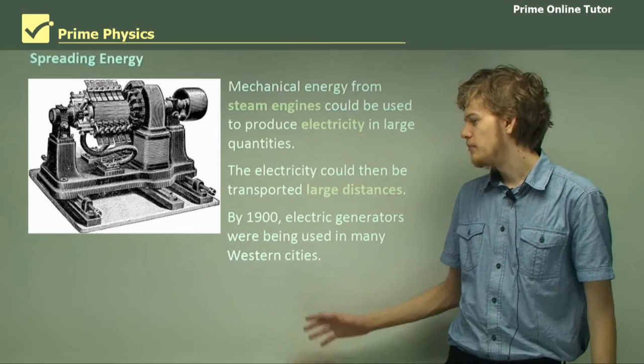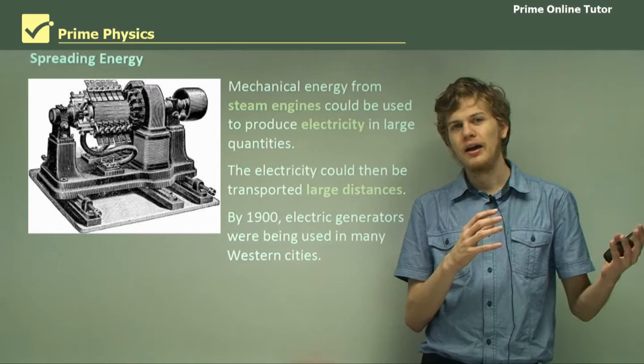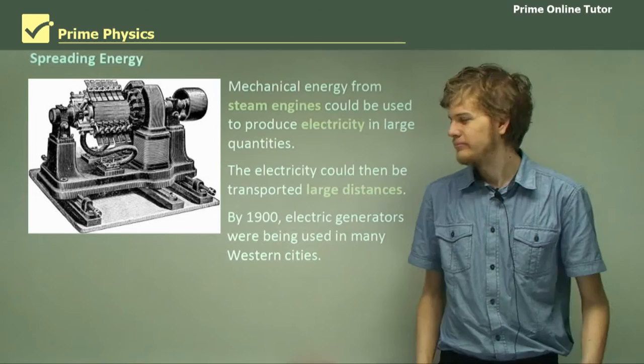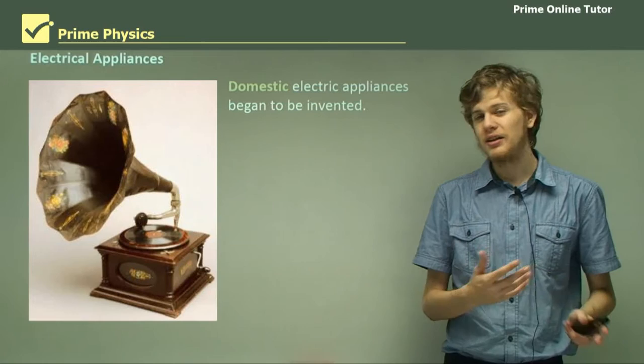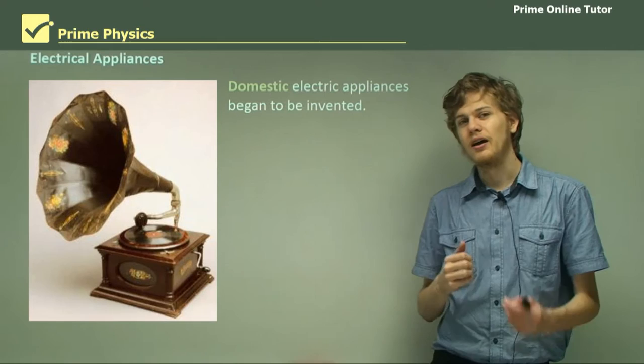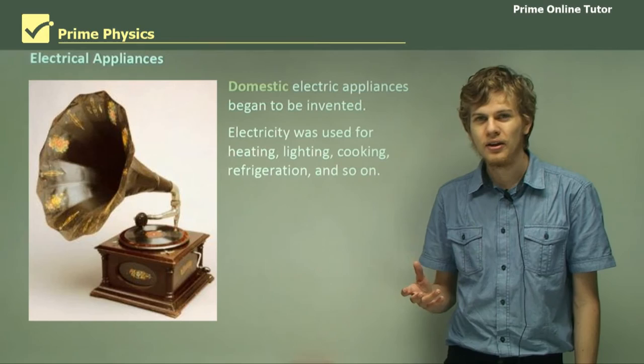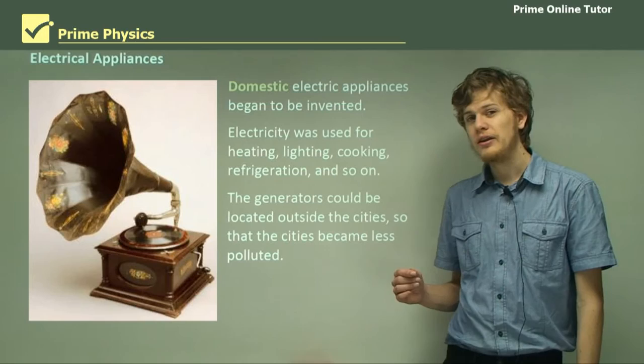By the 1900s, electricity generators were being used in many western cities. It was during the 1890s that long-distance electricity transmission became possible, with the advent of alternating current, or AC power. Once we had electricity being able to be sent everywhere, we started getting domestic electric appliances — that is, appliances using electricity that could be used in the house. Electricity was used for heating, lighting, cooking, refrigeration, and so on, which we of course know today.